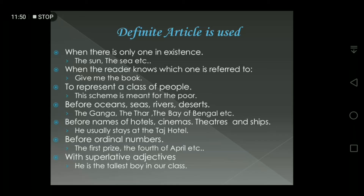Rule three: to represent a class of people — for example: 'This scheme is meant for the poor.' Here 'the poor' refers to the poor class of people, so we use the definite article 'the' before it. Rule four: before oceans, seas, rivers, and deserts — like the Ganga, the Thar desert, the Bay of Bengal. These are names of rivers, deserts, and seas, so we use 'the' before them.